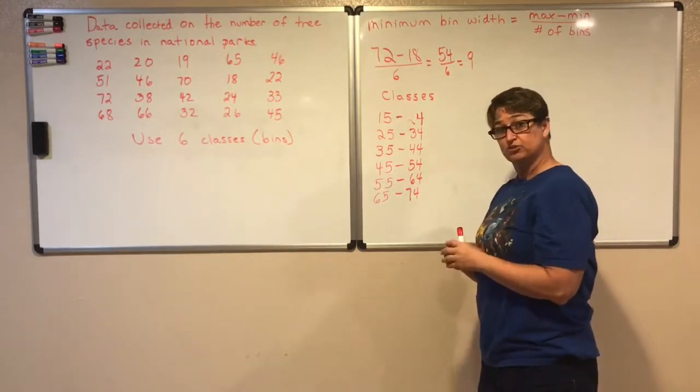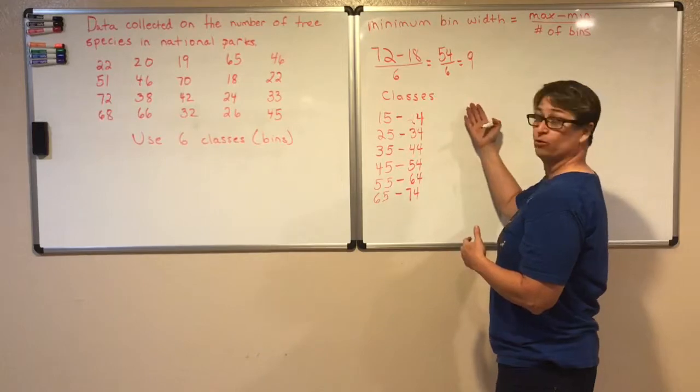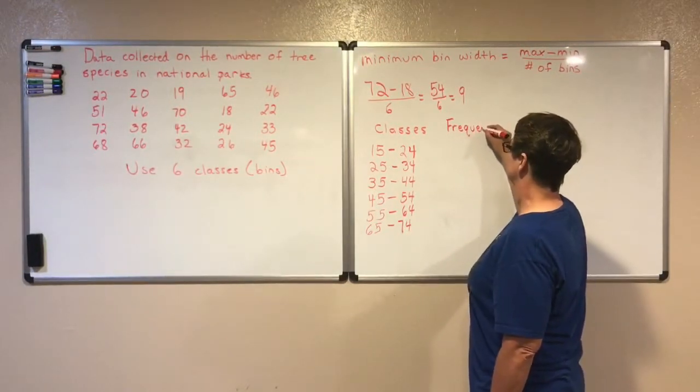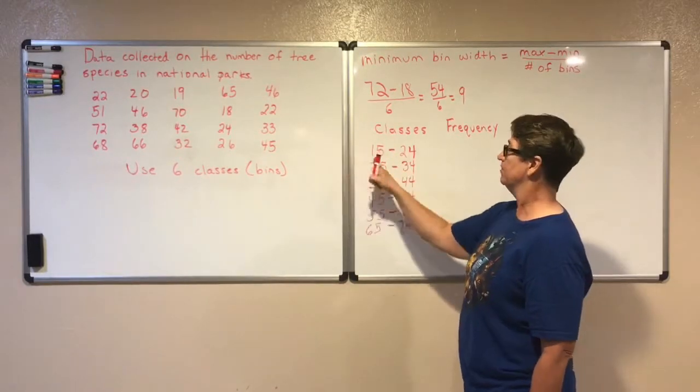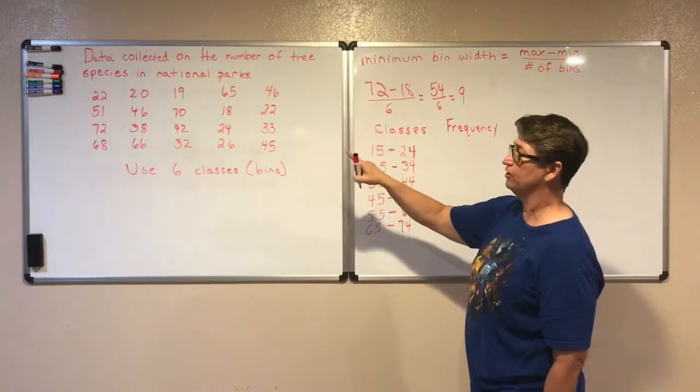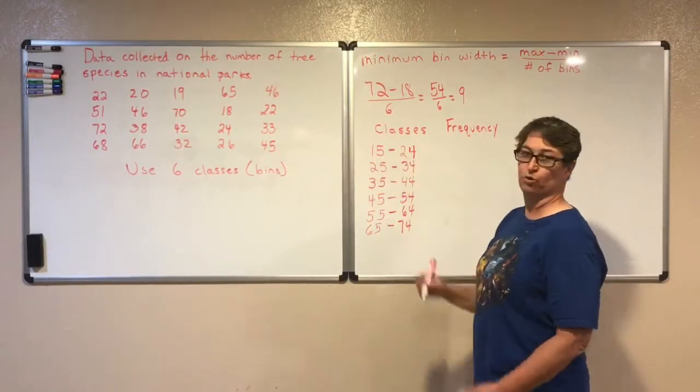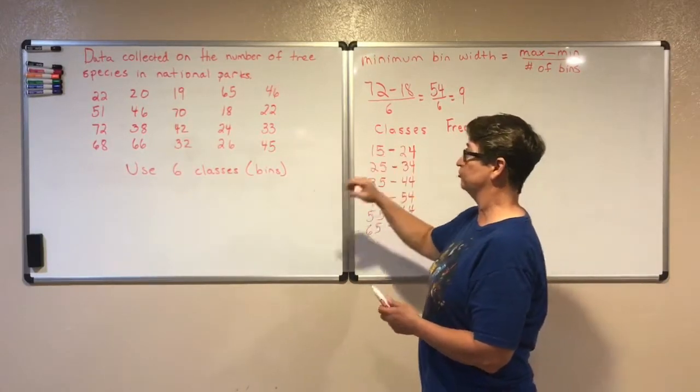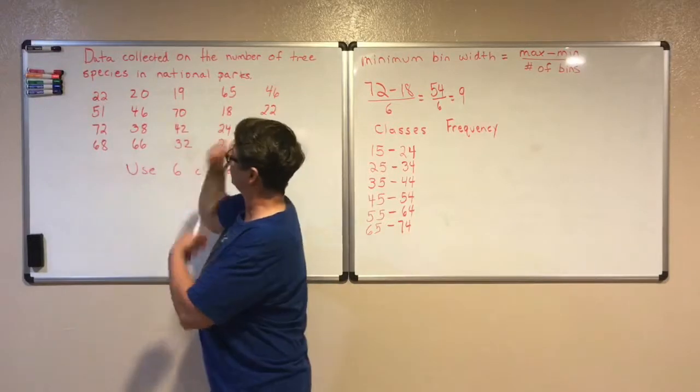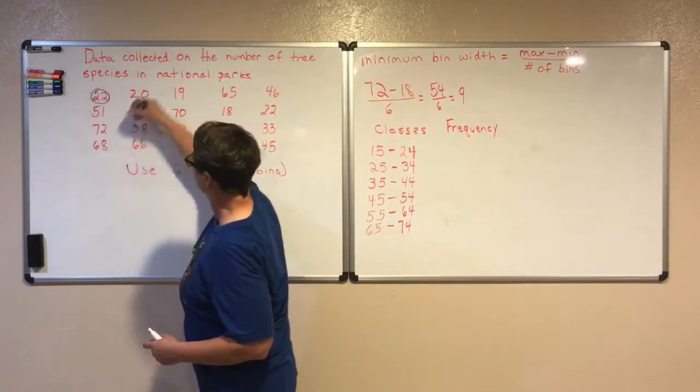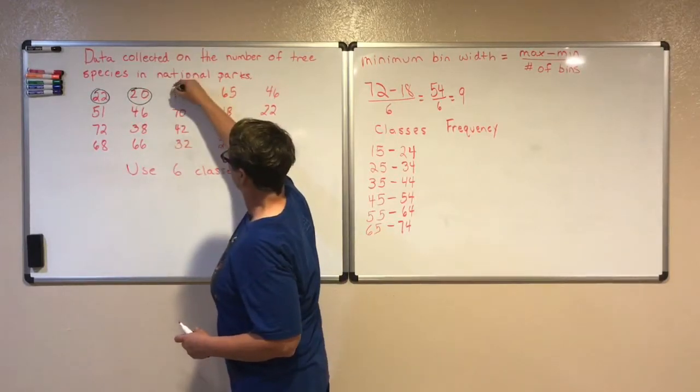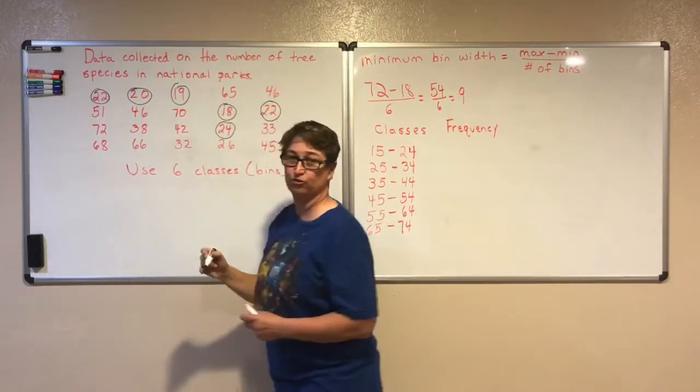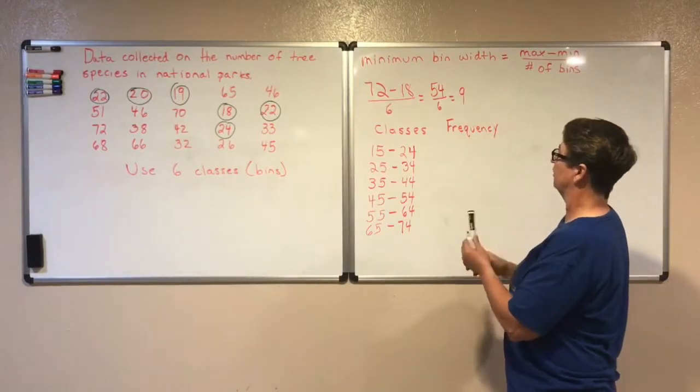With a frequency distribution table we have our classes but then we also need our frequencies. To find the frequencies all I do is count my data that's within this class. So I'm looking for all the data that's from 15 to 24. And to help me count it I'm going to circle my data with different colors. I'm going to find all the data that's between 15 and 24. So there's one, two, three, four, five, and six values there that are between 15 and 24. So I have six of those.